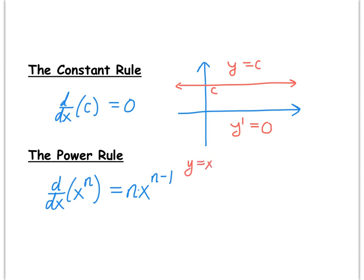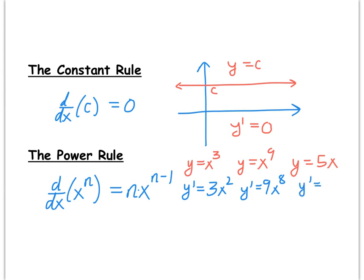Let's take the derivative of x cubed, x to the 9th, and 5x. For x cubed, y prime equals 3x squared — we drop the exponent of 3 in front and decrease the power by 1. For x to the 9th, we drop the 9 in front and get x to the 8th. For 5x, that's x to the first power, so the 1 drops in front with the 5 to make 5, and x to the 0 is just 1, giving a derivative of 5.